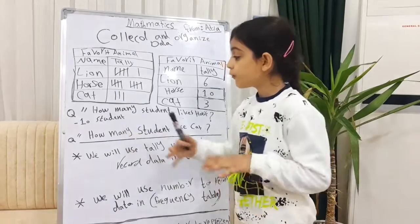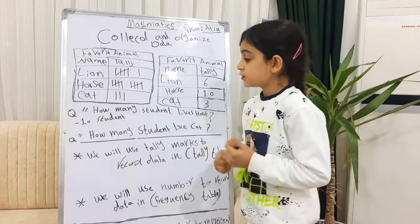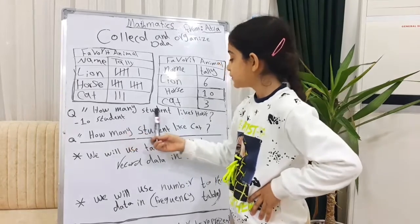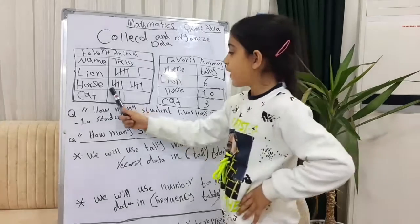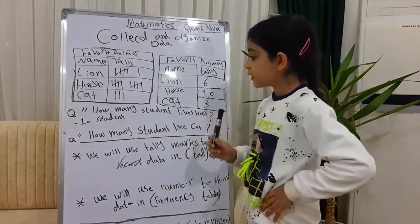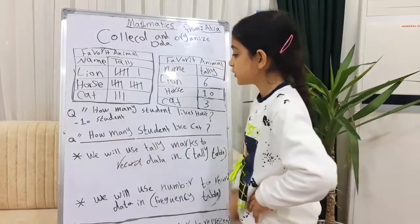For example, a question: How many students like horse? Five, 10. This is number 10. Ten students like horse.